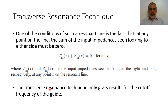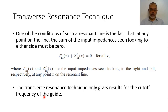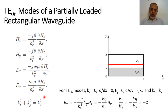The transverse resonance technique only gives us results for the cutoff frequency of the waveguide. From the cutoff frequency, we can obtain the propagation constant as beta equals the square root of K squared minus Kc squared. Now let us apply the transverse resonance technique for the case of a partially filled rectangular waveguide. This waveguide is filled with a substrate of thickness t in the y-direction, with the remaining air part above.